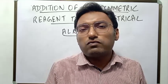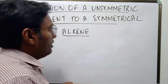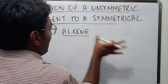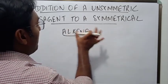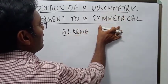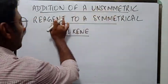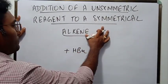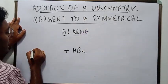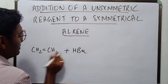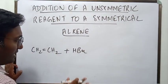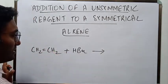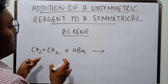Welcome dear students. Today we are going to focus on the question: what would happen if an unsymmetrical reagent reacts with a symmetrical alkene? As an example of an unsymmetrical reagent I take HBr, and as an example of a symmetrical alkene I take the simplest of all symmetrical alkenes, which is ethene. What would happen if they are both made to react with each other? To answer this question we first need to know the nature of these two reactants.